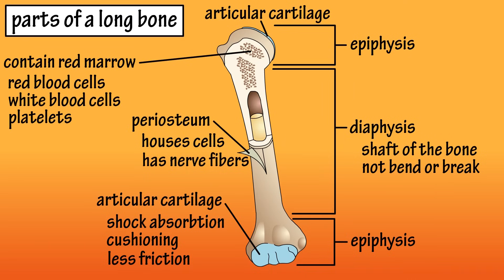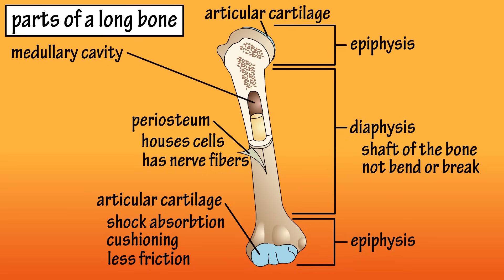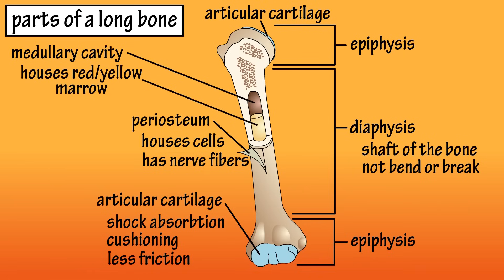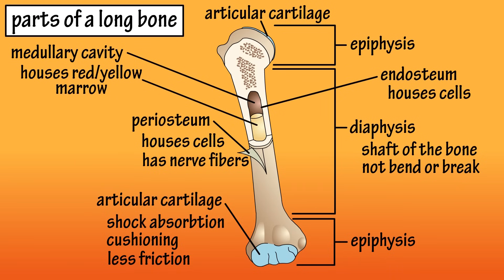Inside the diaphysis is a tube-like area called the medullary cavity, which houses red marrow during childhood, and which is replaced by yellow marrow as a person ages. There is a thin membrane that lines the medullary cavity called the endosteum, which contains cells that are important in bone growth and repair. Bones are also well supplied with arteries and veins, and that covers the basic parts of a long bone.